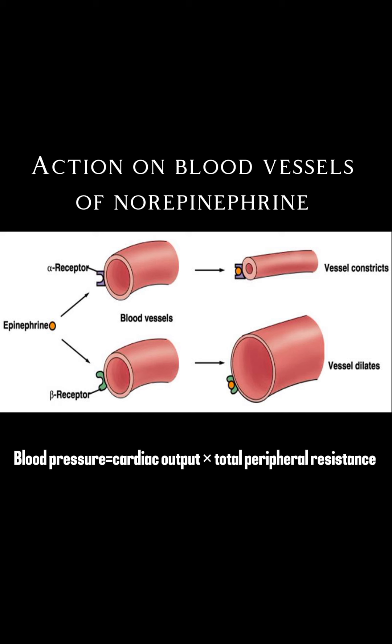Noradrenaline causes blood vessels to constrict by acting on alpha-1 receptors, leading to an increase in peripheral resistance. This makes it harder for blood to flow through the vessels, thus increasing blood pressure.